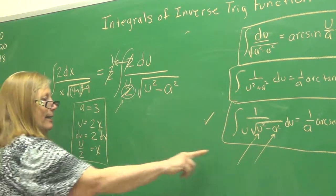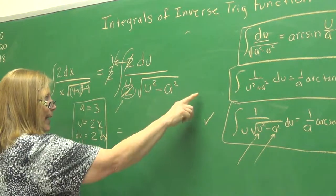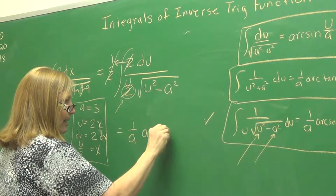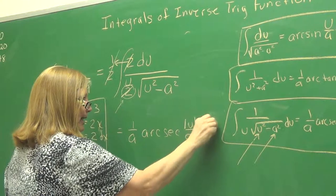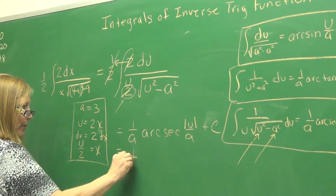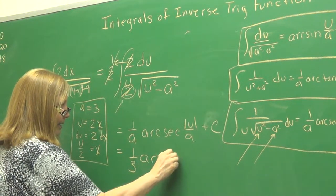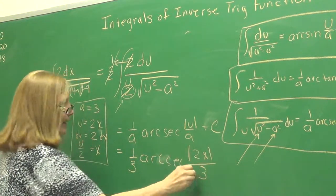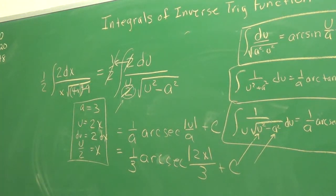So, we have now the exact thing. So, we can say the answer. We have the exact pattern that we need. So, we can say the answer is 1 over A, arc secant, absolute value of U over A, plus C. And now we go back and put in the numbers. So, 1 over 3, arc secant, absolute value of U is 2X. Our A is 3, plus C. Let me check that, see if we got everything we needed to. We did.